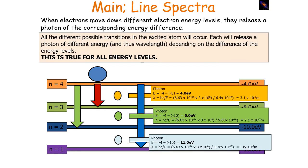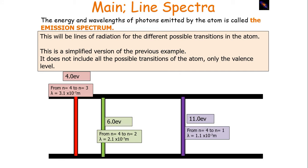For example, you could have photons with energies of 4 eV, 6 eV, and 11 eV, and therefore wavelengths of 3.1×10⁻⁷ m, 2.1×10⁻⁷ m, and 1.1×10⁻⁷ m. The energies and wavelengths of photons emitted by the atom is called the emission spectrum — these will be lines of radiation for the different possible transitions in the atom. This simplified version doesn't include all possible transitions, only the ones from the valence level.